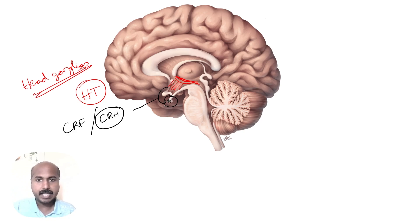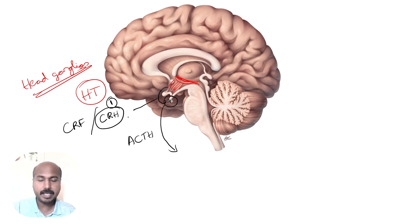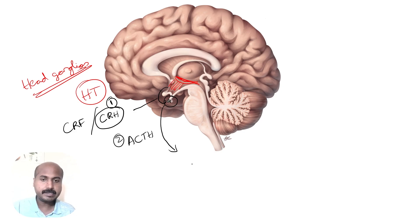The corticotrophs secrete the adrenocorticotrophic hormone, ACTH. So the first hormone in the HPA axis is CRH, and the second is ACTH. The ACTH then acts on the adrenal gland.